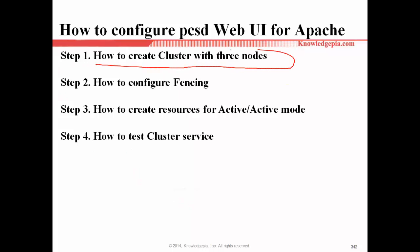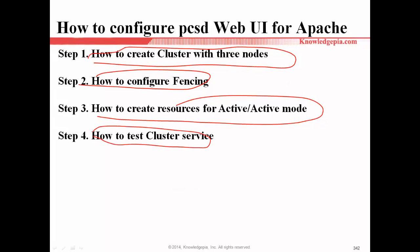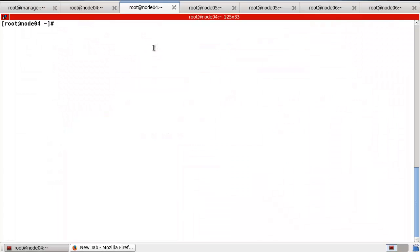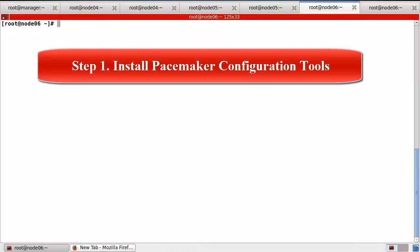How to create the cluster with the cluster nodes: step one, step two — how to configure fencing, step three — how to create resources for active and active mode, and step four — how to test the cluster service. I have prepared four cluster nodes: manage node 4, node 5, and node 6. I already installed Apache and pacemaker packages. In step one, we need to check the packages.